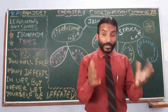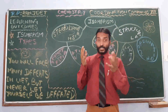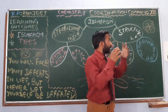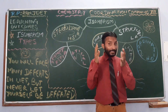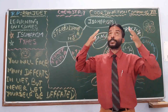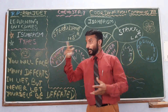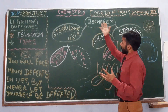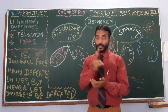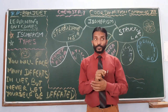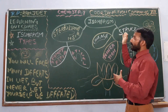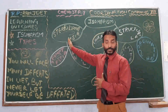What is isomerism? We know this is a phenomenon in which compounds have similar molecular formula but different structural formula. Here in coordination compounds, isomerism is of two types: structural isomerism and stereoisomerism.